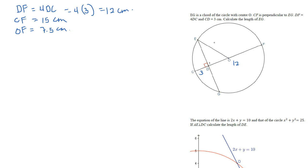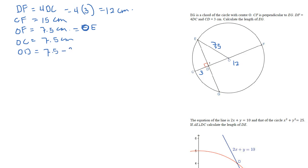So the radius OE is also 7.5 cm — both OE and OC are radii equal to 7.5 cm. OC equals 7.5 cm, which means OD equals 7.5 minus 3 cm, giving us 4.5 cm.